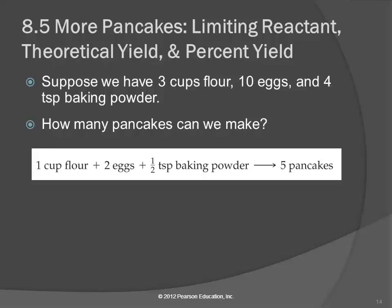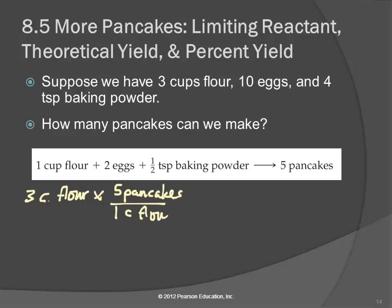Well, if we have one cup of flour, we can make five pancakes. So there's five pancakes for every cup of flour. We have three cups of flour. If we used up all the flour, we could make fifteen pancakes. Three cups of flour — we know from this recipe that it's five pancakes for every one cup of flour, so that would make fifteen pancakes.